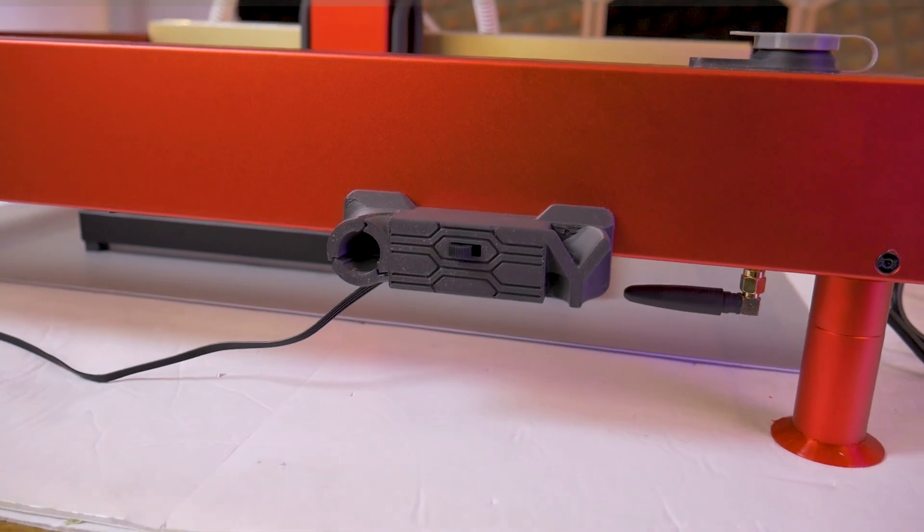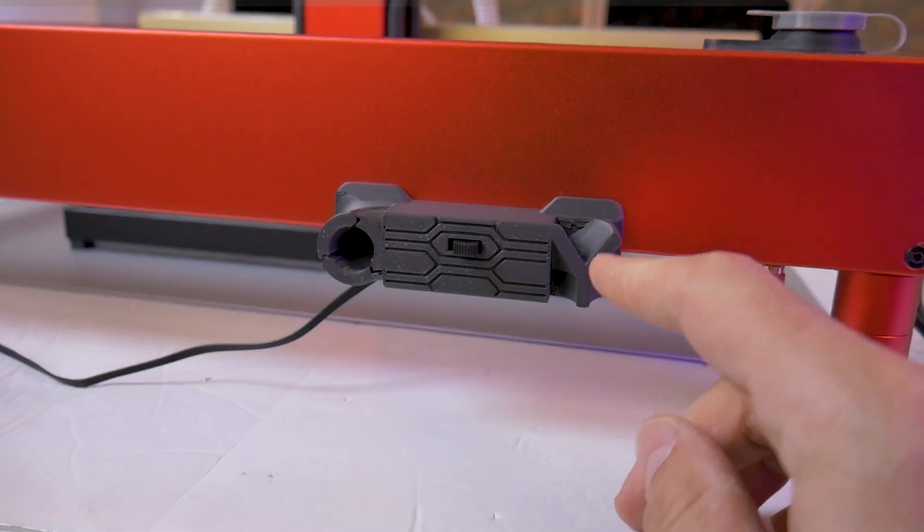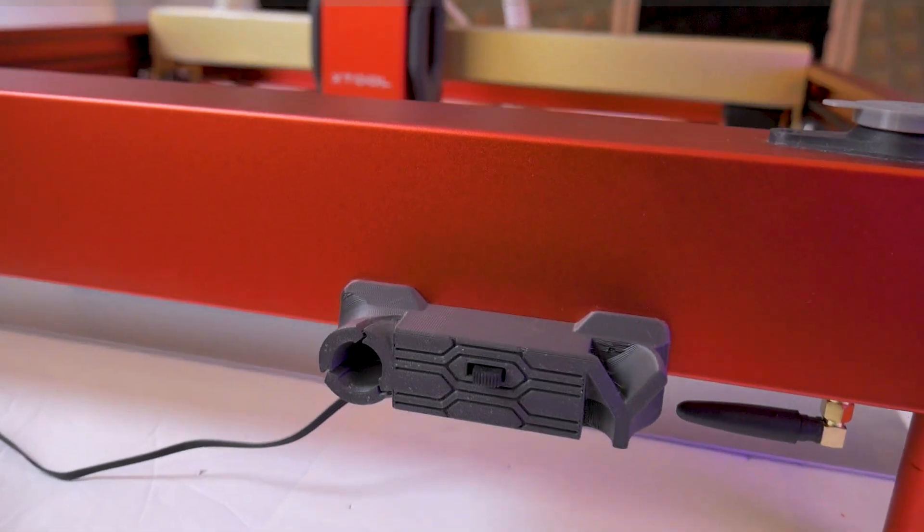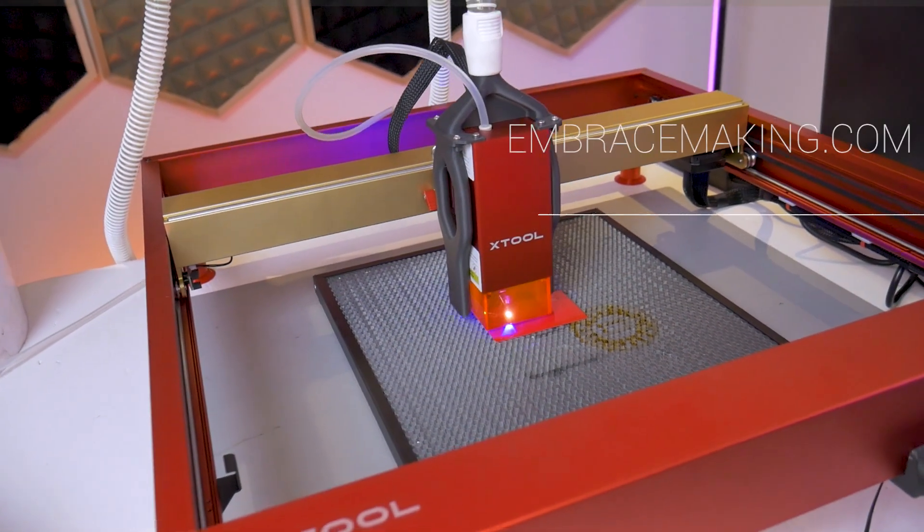When you're ready to change back to the regular XY engraving and cutting mode, with the machine power off flip the switch over to the Y symbol and you're ready to go.